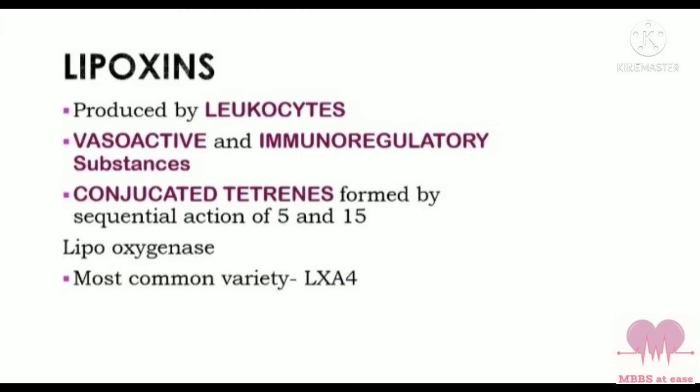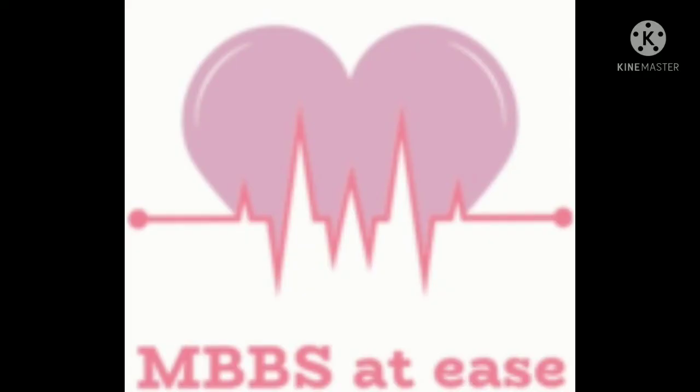Lipoxins are produced by leukocytes. They are vasoactive and immunoregulatory substances — in fact, they are counter-regulatory compounds of the immune responses. They are conjugated tetraenes formed by the sequential action of 5- and 15-lipoxygenase. The most common variety of lipoxin is LXA4; it is anti-inflammatory and decreases immune responses.